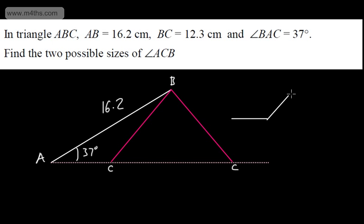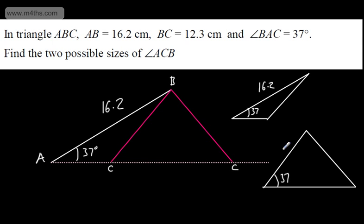If I draw the first one, we're going to have something that looks like this. If I draw the second one, we're going to have a much longer base and then a much bigger angle at the top. These are two possible configurations of the triangle. If I put the information on, we've got the 37 degree angle here and here. This is going to be the 16.2, and this is going to be the 16.2.